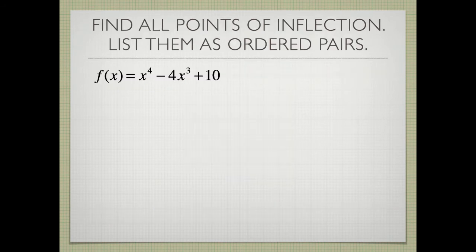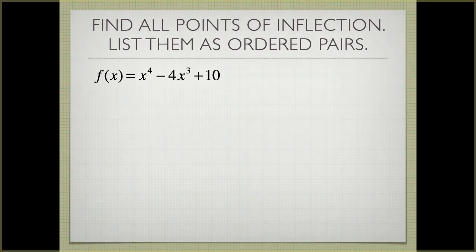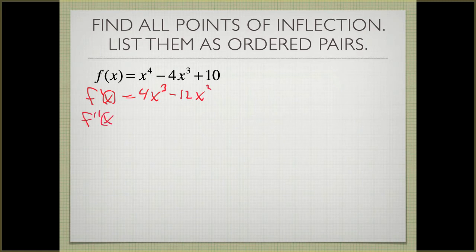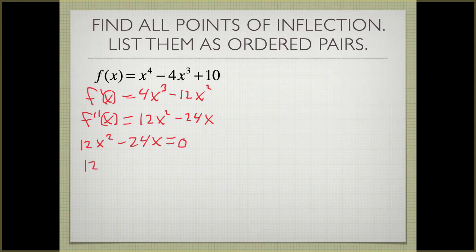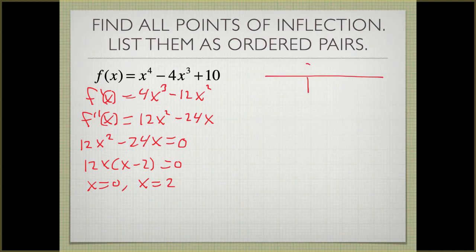Find all points of inflection and list them as ordered pairs. We take the second derivative: f'(x) is 4x³ minus 12x², and f''(x) is 12x² minus 24x. We set this equal to zero to find our critical points. Factoring gives 12x(x minus 2) equals zero, so we have critical points at x = 0 and x = 2. We will use a sign chart with 0 and 2 marked.